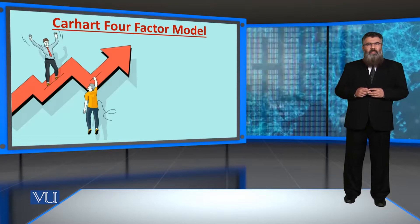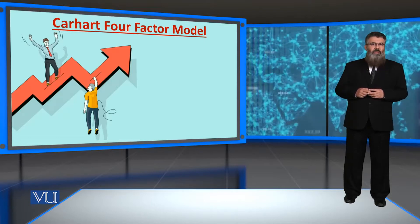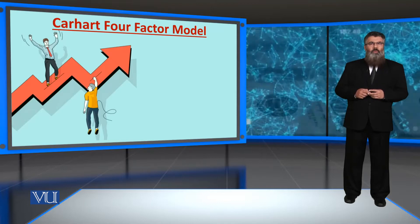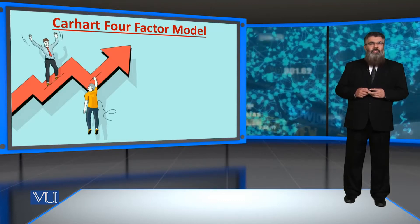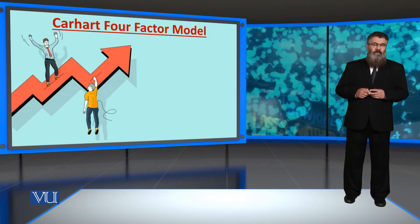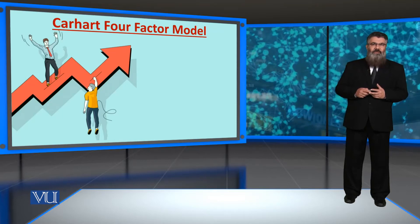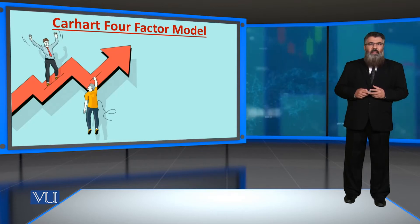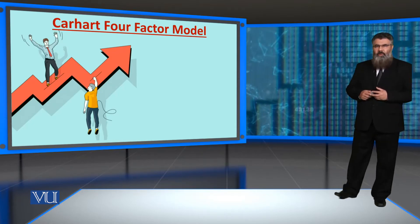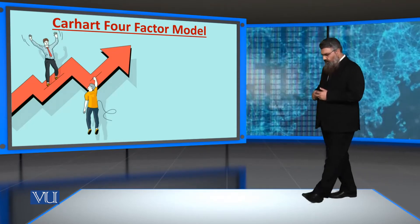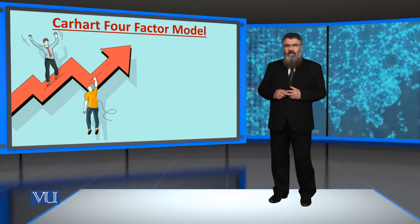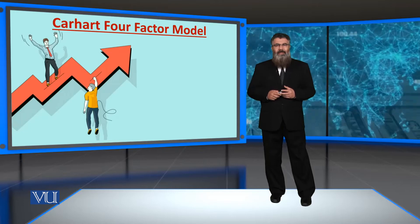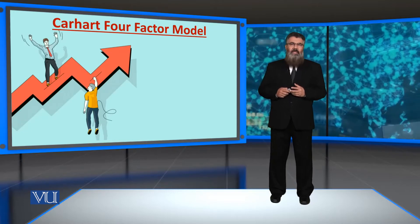In the Fama and French three-factor model, we talked about two new variables in addition to the market risk — that is the size factor and the value factor. In this four-factor model, which is the Carhart's four-factor model, we talk about another variable called the momentum variable.